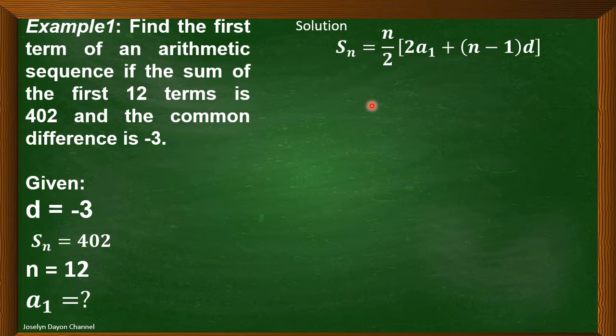Now, let's substitute to the formula these values. So, we have here 402 is equal to n, which is 12, divided by 2.